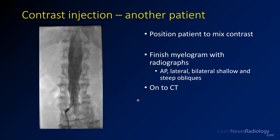Here's another patient showing a similar injection without hardware. Again, you see the nerve root sleeve outpouchings, filling defects from the nerve roots themselves, and contrast spreading along multiple levels. Once you're done with your injection and the needle is out, you want to do some positioning to move the contrast to wherever you're imaging. In our institution we don't take a lot of plain radiographs because we do most of our interpretation from CT, and the patient will go on to CT for their final imaging.